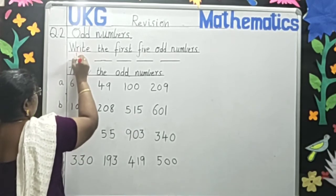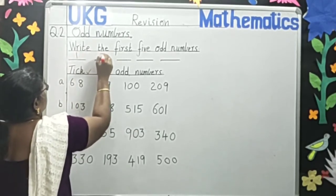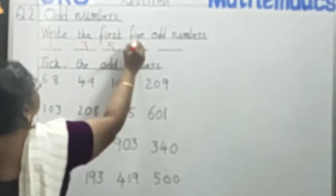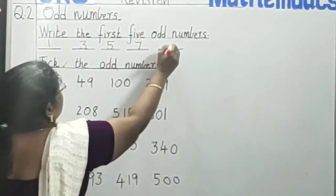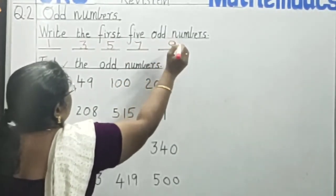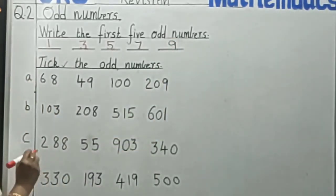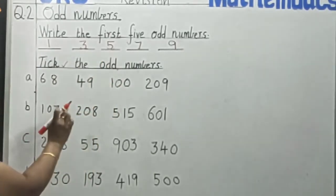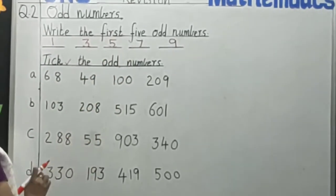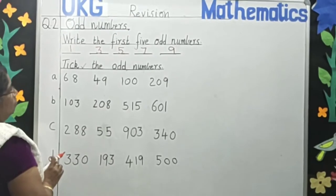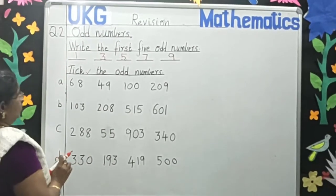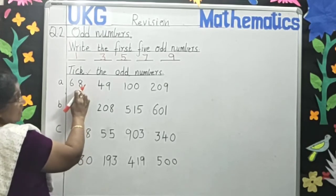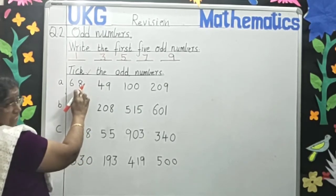Yes. One, three, five, seven, nine are the odd numbers. Now tick the odd numbers. Here we have got some numbers. We will see what are the odd numbers. Sixty-eight. Eight is the last number. Eight is the odd number?